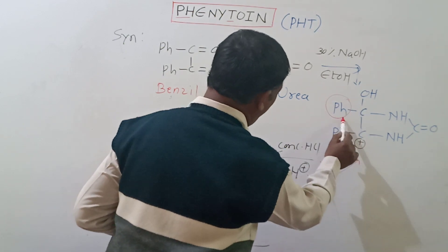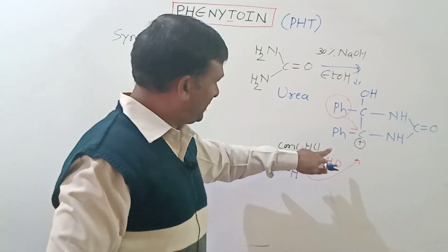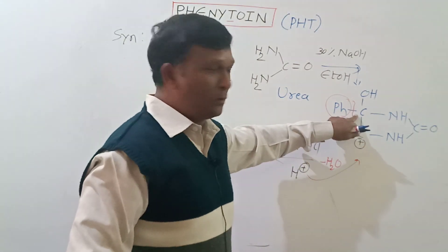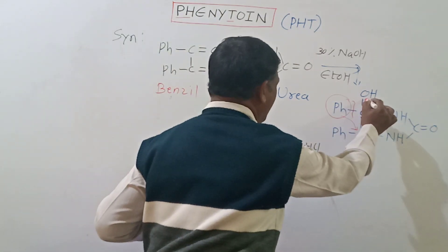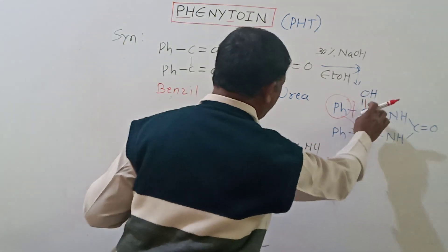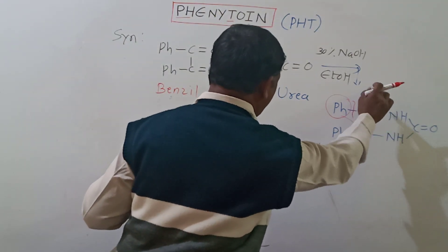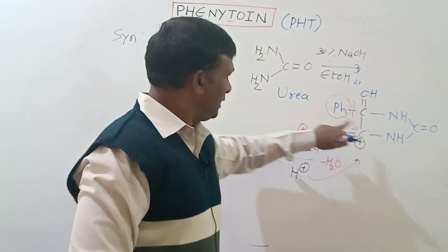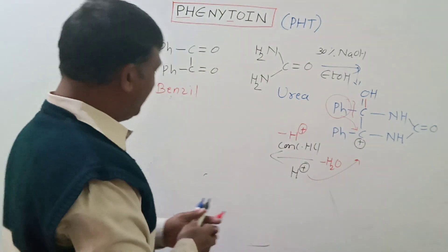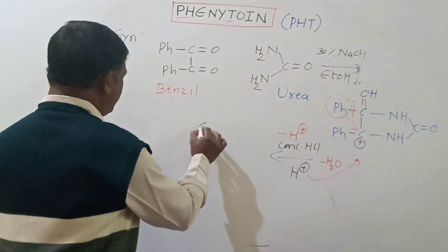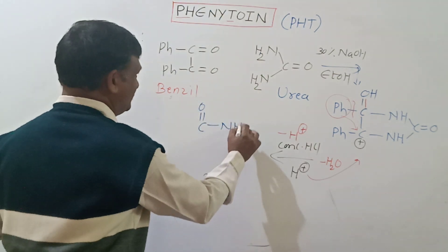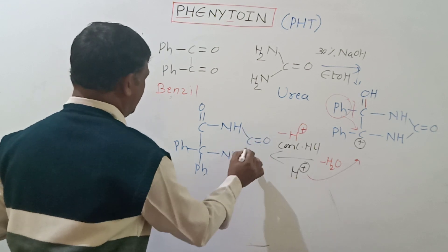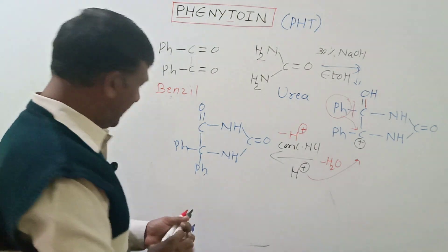When this migration takes place, one of this bond will get broken down. When this bond is broken, the carbon tends to make a double bond with this oxygen. For making the bond between the carbon and oxygen, this oxygen loses this proton. So there is removal of a proton and migration of phenyl over to this carbon, which will lead to give us the compound phenytoin.